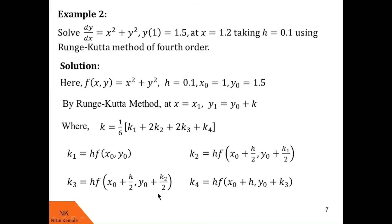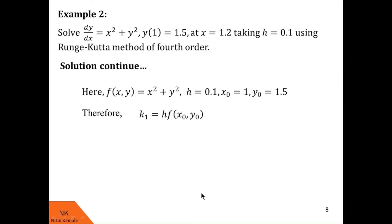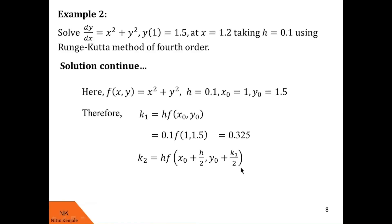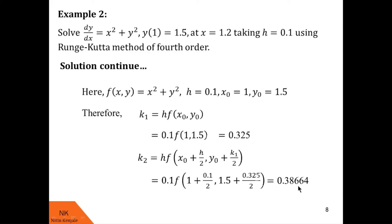Let us calculate these k values one by one. k₁ = h·f(x₀, y₀), with h = 0.1, x₀ = 1, y₀ = 1.5. Substituting into f(x, y) = x² + y², after calculation k₁ = 0.325. Now for k₂, we put k₁ = 0.325, and after simplification we find k₂ = 0.38664.